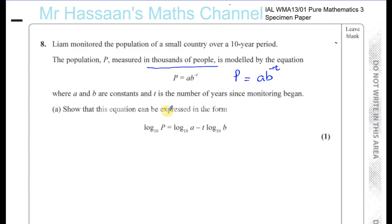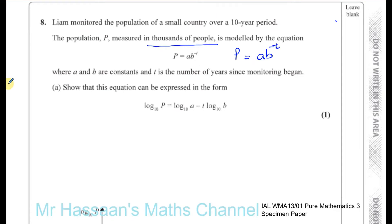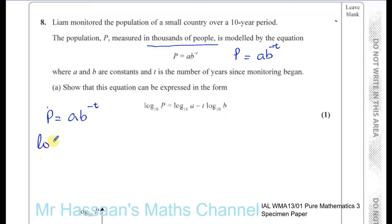Show that this equation can be expressed in the form log to the base 10 of P equals log to the base 10 of A minus T times log to the base 10 of B. So we start with P equals A times B to the power of minus T, and we take the log to the base 10 of both sides. So we have log base 10 of P equals log base 10 of AB to the power of minus T.